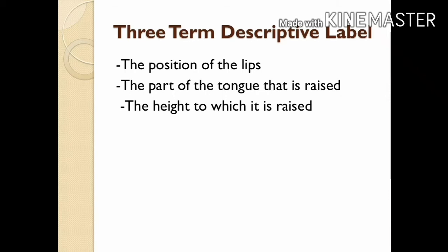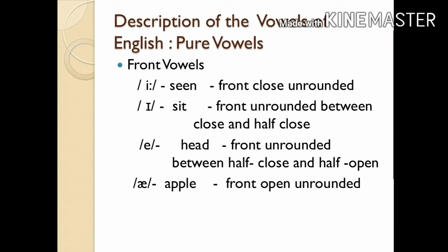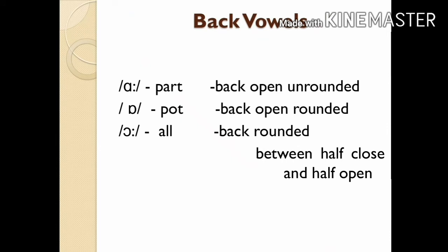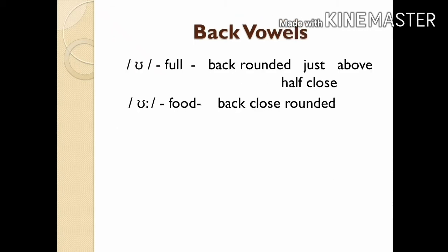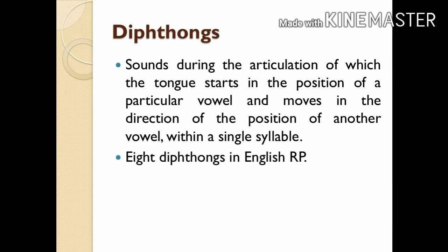Here is the description of English vowels with three-term labels: /iː/ — front, close, unrounded; /ɪ/ — front, unrounded, between close and half-close; /e/ — front, unrounded, between half-close and half-open; /æ/ — front, open, unrounded; /ɑː/ — back, open, unrounded; /ɒ/ — back, open, rounded; /ɔː/ — back, rounded, between half-close and half-open; /ʊ/ — back, rounded, just above half-close; /uː/ — back, close, rounded.